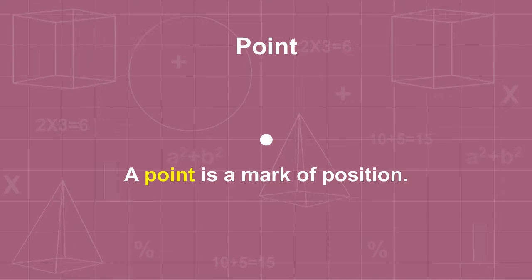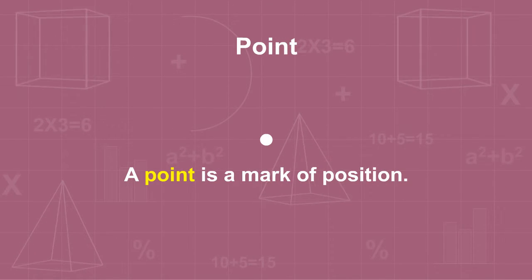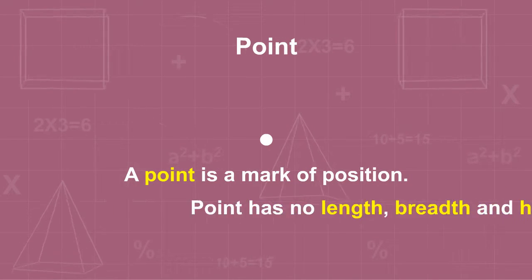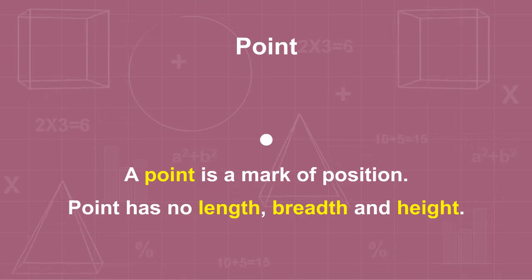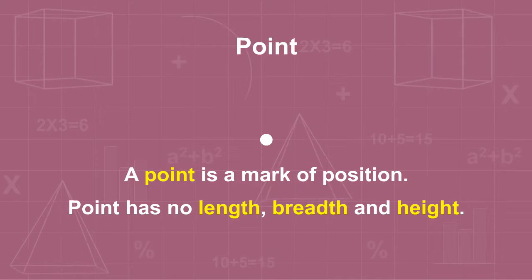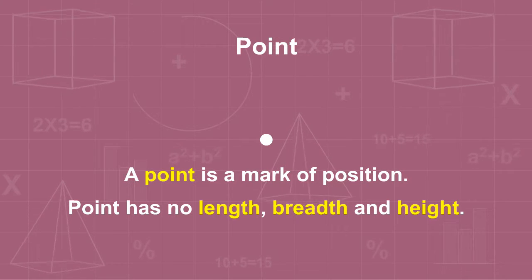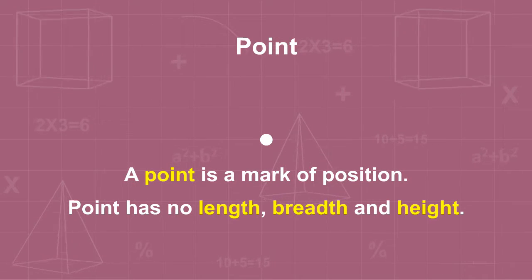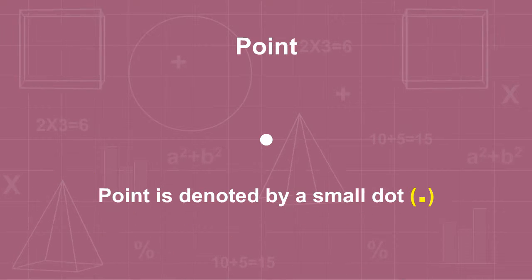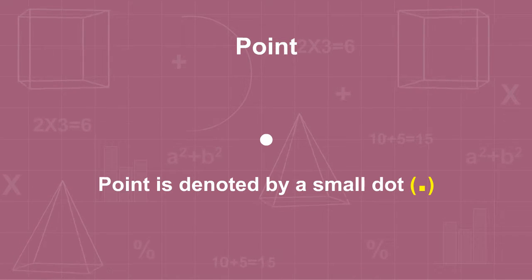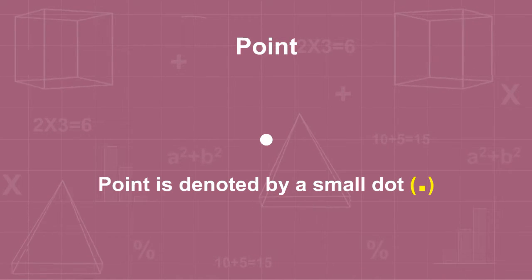A point is a mark of position. It has no dimension — that is, it has no length, breadth, or height. A point is denoted by a small dot.